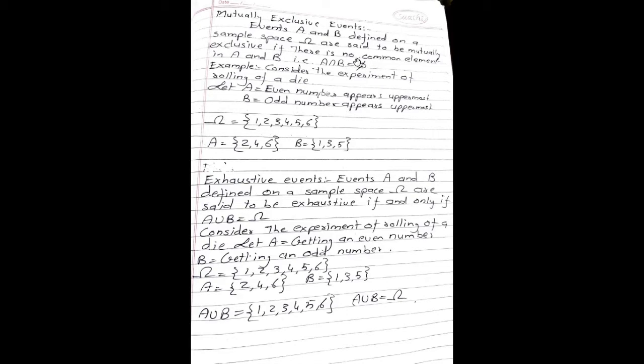Next definition: exhaustive events. Events A and B defined on the sample space omega are said to be exhaustive if and only if A union B is equal to omega. Consider the experiment of rolling a die. Let A be the event of getting an even number and B be the event of getting an odd number. So omega is {1,2,3,4,5,6}, event A is {2,4,6} and B is {1,3,5}. The concept of A union B is elements either in A or in B or in both. So A union B equals {1,2,3,4,5,6}, which is nothing but omega.